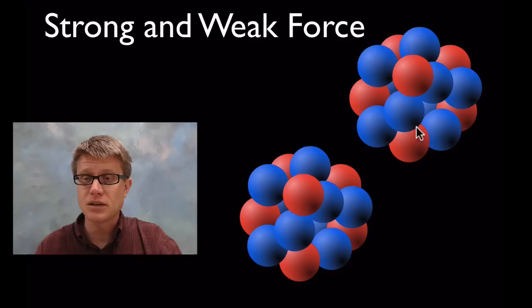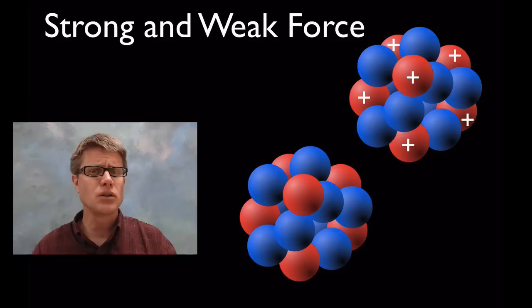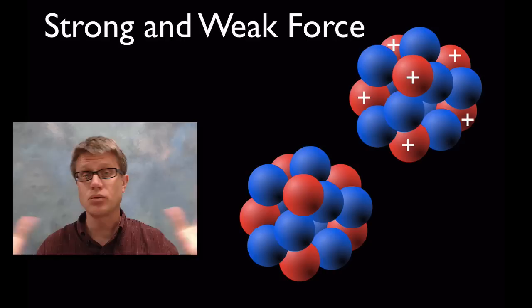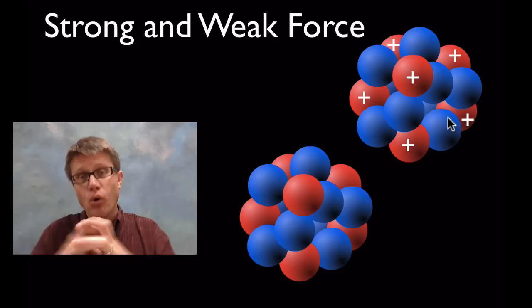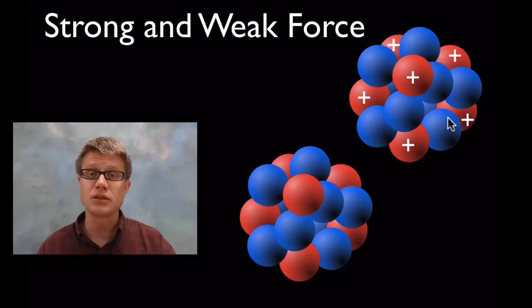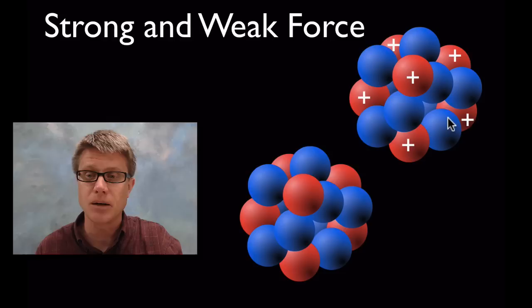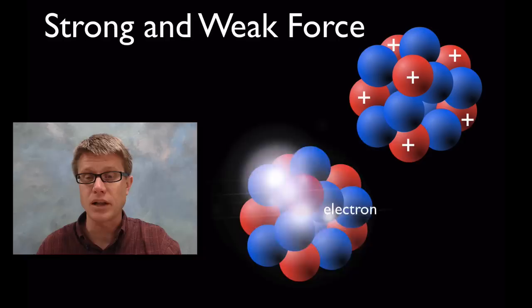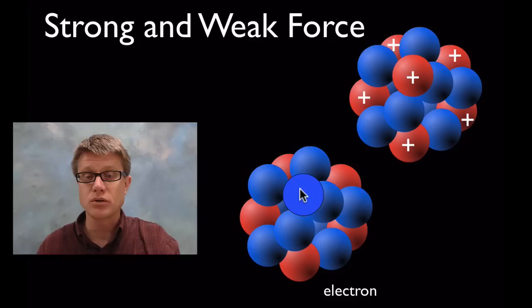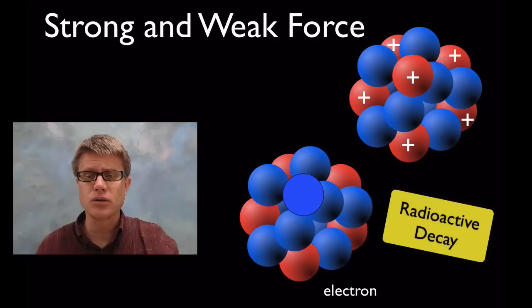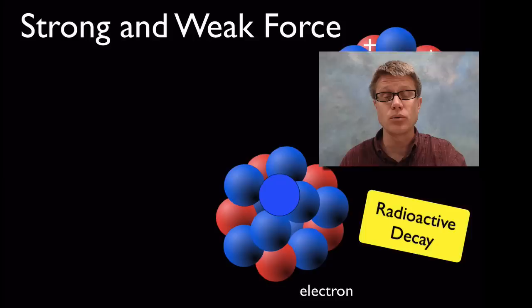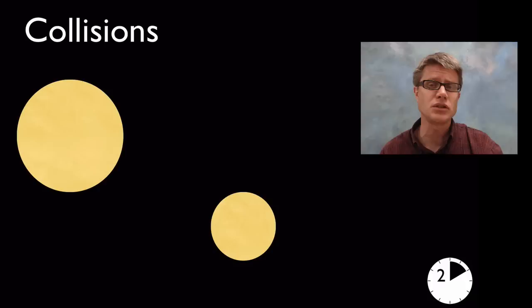Finally, the strong and weak nuclear forces are found only in the nucleus of an atom. The red balls represent protons — all positively charged — so you'd expect them to repel and fly apart. But the strong nuclear force, provided by neutrons, holds the nucleus together. As atoms get larger, more neutrons are needed to keep the nucleus stable. The weak force involves quarks and can change a proton into a neutron, releasing an electron. Both forces relate to radioactive decay and explain why an atom's nucleus changes.